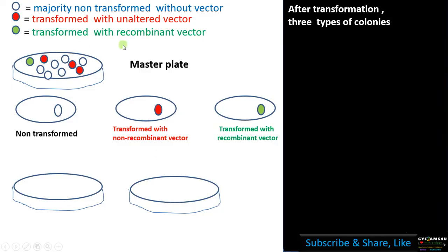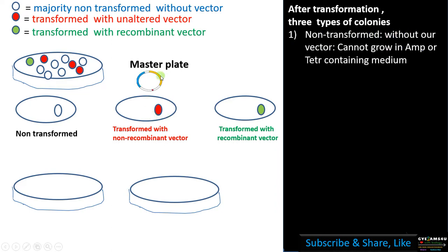After a transformation experiment we will get three types of colonies. The first is non-transformed — the majority will be non-transformed, without our vector. The second is transformed with a non-recombinant vector, meaning the vector remains intact without our gene of interest. The third is transformed with a recombinant vector, where insertional inactivation has happened and the gene of interest is present. We need to select these recombinant colonies.